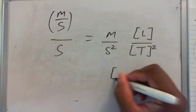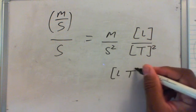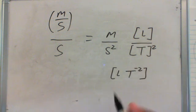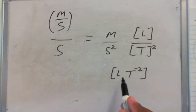So to write this in a more common way, it's written like this. This is an acceleration. This is the dimensions of acceleration.